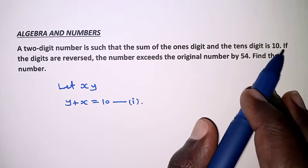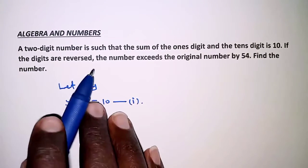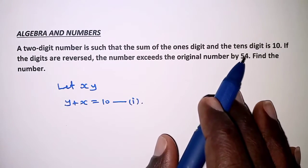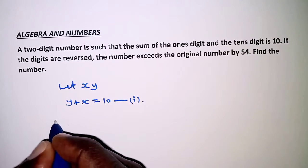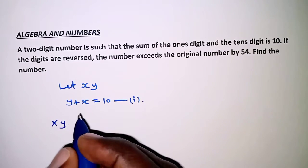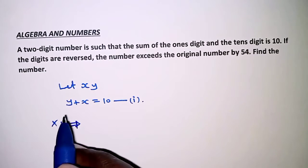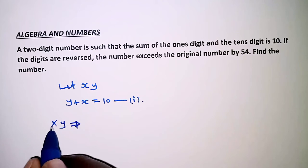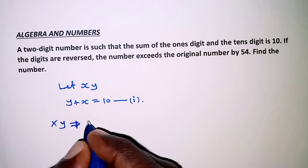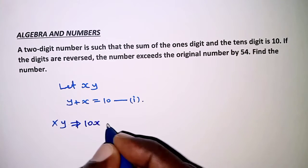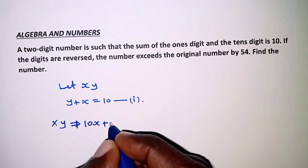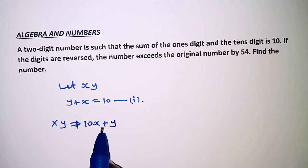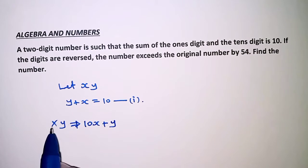The next statement says: if the digits are reversed, the number exceeds the original number by 54. Originally, the number XY means the total value is 10 times X for the tens digit, plus 1 times Y, which is Y, for the ones digit. This gives us the value of the number before the digits are reversed.